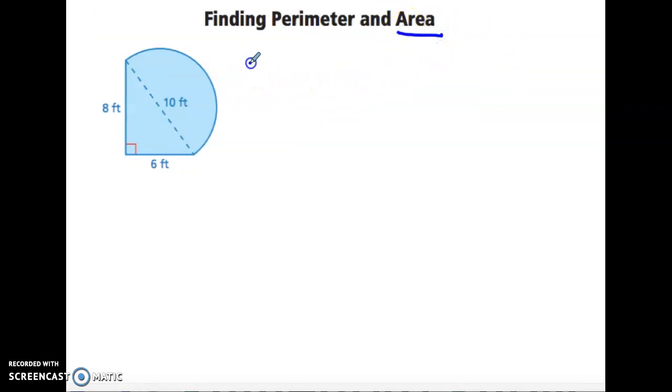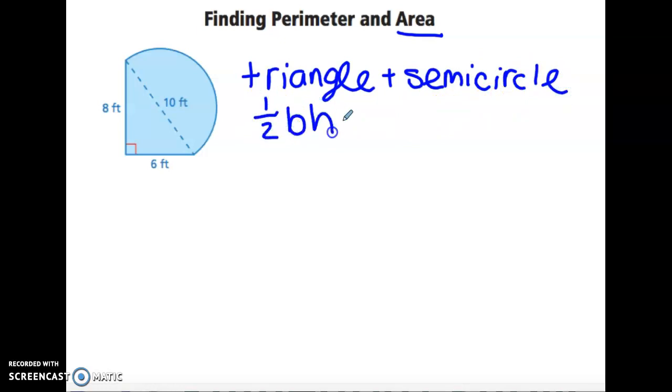So we want area of the triangle plus the semicircle. Triangle area is one-half base times height, and semicircle—that's half a circle—so that's one-half, and area of the circle is pi r squared.